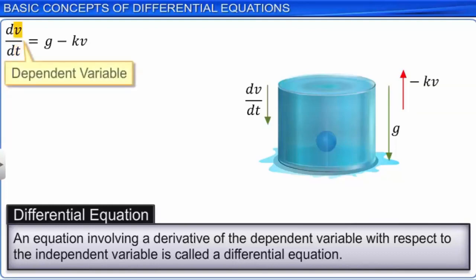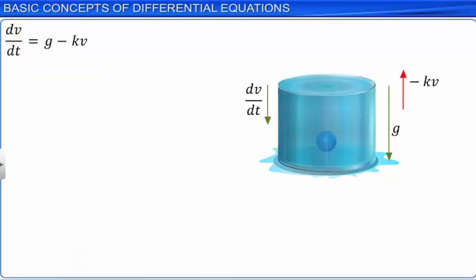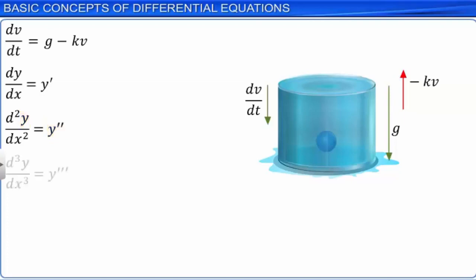For convenience, we express derivatives with a standard convention. The first derivative of y with respect to x is denoted by y dash. The second derivative is denoted by y double dash, and the third by y triple dash. For higher order derivatives, to avoid so many dashes, we use the notation y subscript n for the nth order derivative.